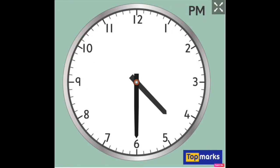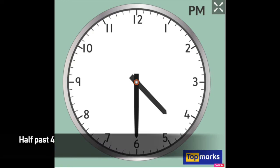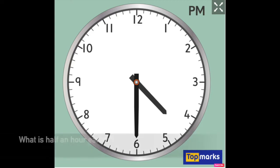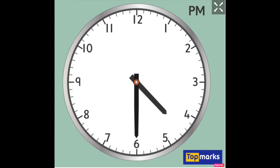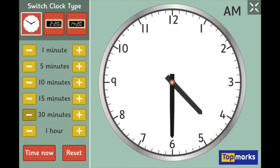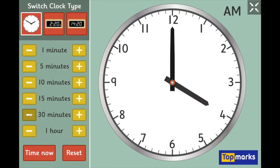The last two examples we are going to work on today are half an hour earlier or later times. What time is it here? Half past four. What is half an hour earlier? Notice I said half an hour earlier, not an hour earlier. Half an hour on the clock is thirty minutes, so the question means what is thirty minutes before half past four? We move the big hand back by thirty minutes. Half an hour earlier than half past four is four o'clock.